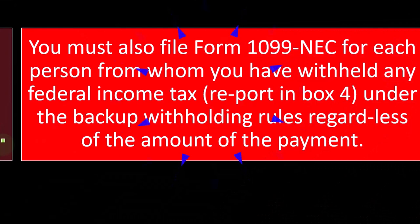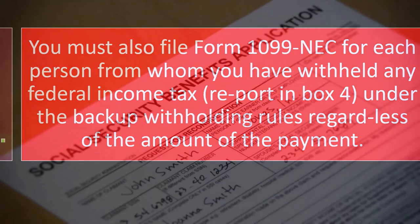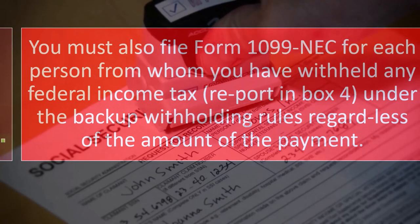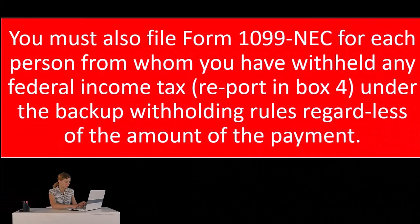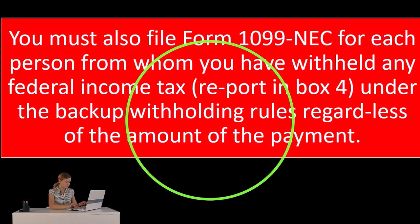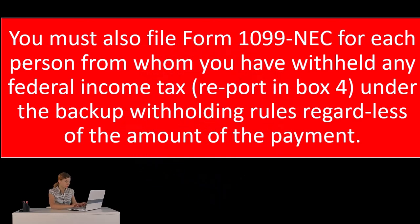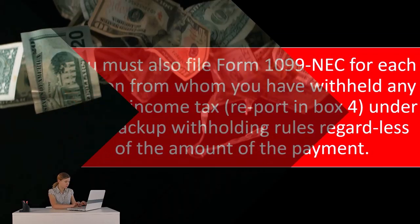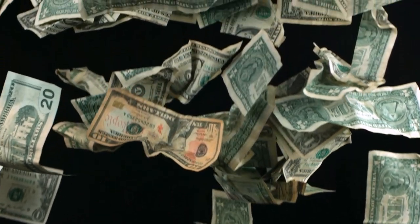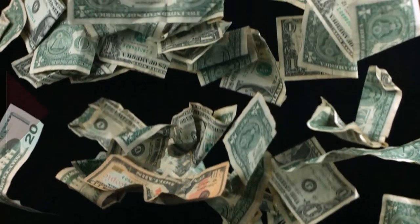However, if you can't provide that information — if you can't get the Social Security number, address, or proper name of the contractor — then the IRS wants you to withhold. Because you're not properly identifying the person you paid, they want you to withhold as if the contractor were more like an employee, ensuring that taxes get paid that way.